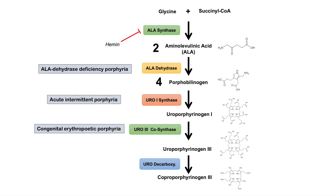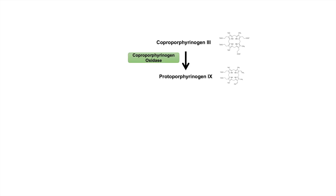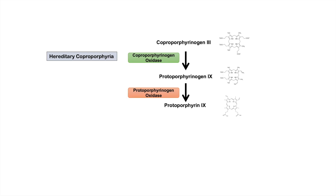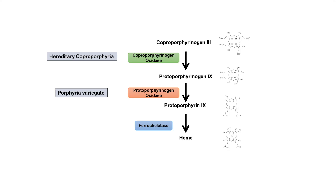Uroporphyrinogen 3 can then be processed by uroporphyrinogen decarboxylase to coproporphyrinogen 3, and issues with urodecarboxylase lead to porphyria cutanea tarda. Coproporphyrinogen oxidase can then produce protoporphyrinogen 9, and issues with this enzyme lead to hereditary coproporphyria. Protoporphyrinogen oxidase acts on protoporphyrinogen 9 to produce protoporphyrin 9, and issues with this enzyme lead to porphyria variegata. Finally, ferrochelatase acts on protoporphyrin 9 to produce heme, and issues with ferrochelatase lead to erythropoietic protoporphyria.